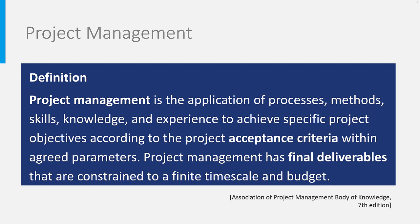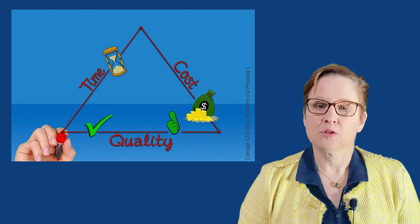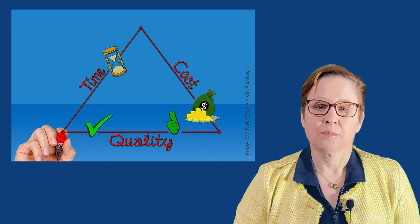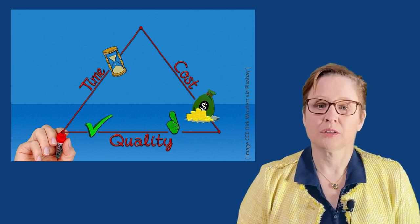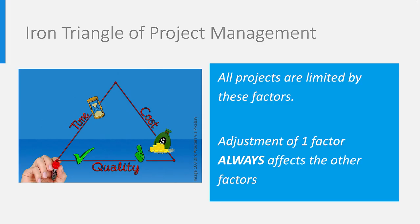In this context, project management is the application of process, methods, skills, knowledge and experience to achieve specific project objectives, according to the project acceptance criteria within the agreed parameters. That brings me to the so-called iron triangle of project management, consisting of time, cost and quality. All projects are limited by these three factors. If you adjust one of these factors, they will always affect the other two. When working on projects, it is important to keep this rule in mind.